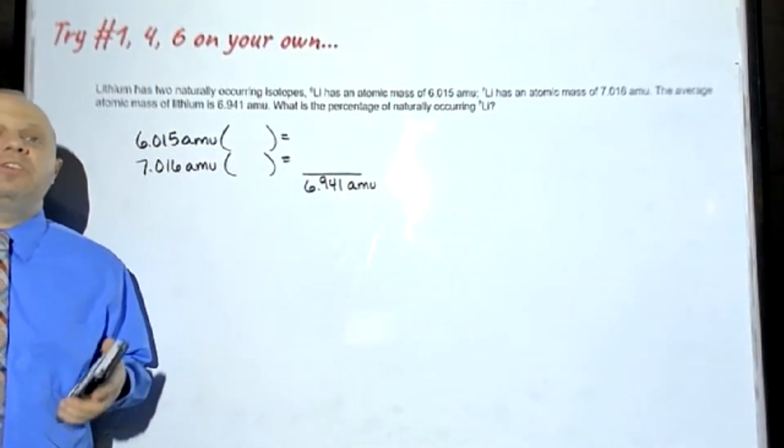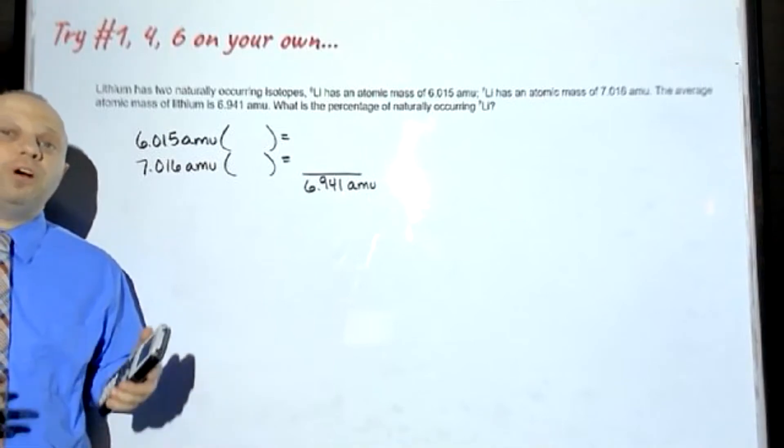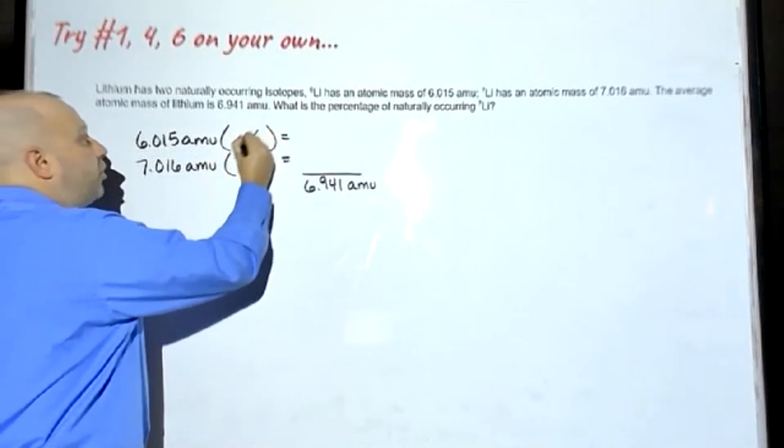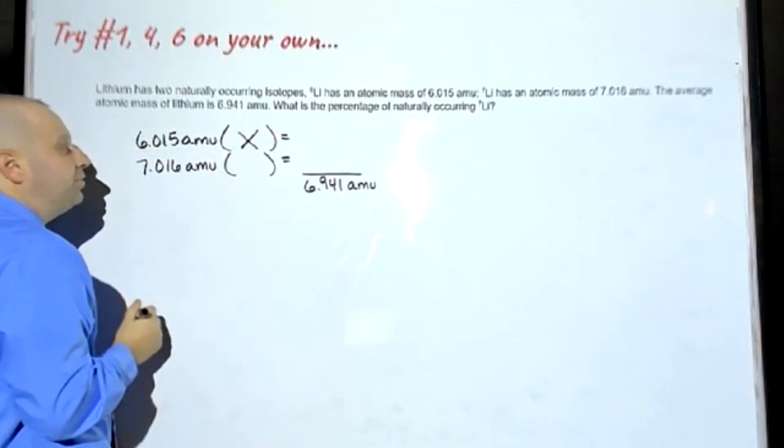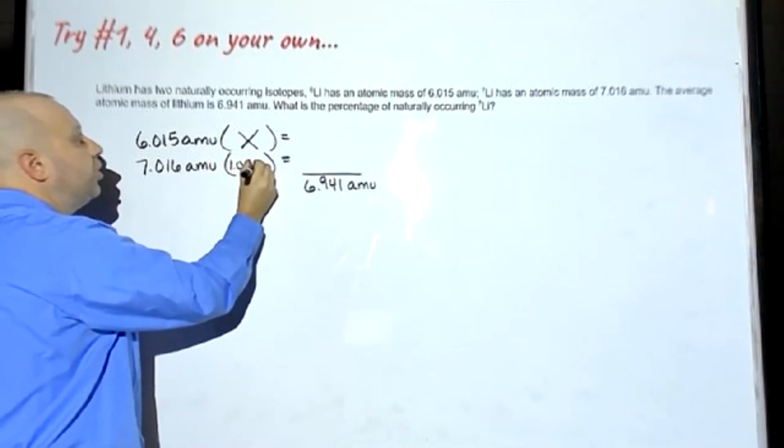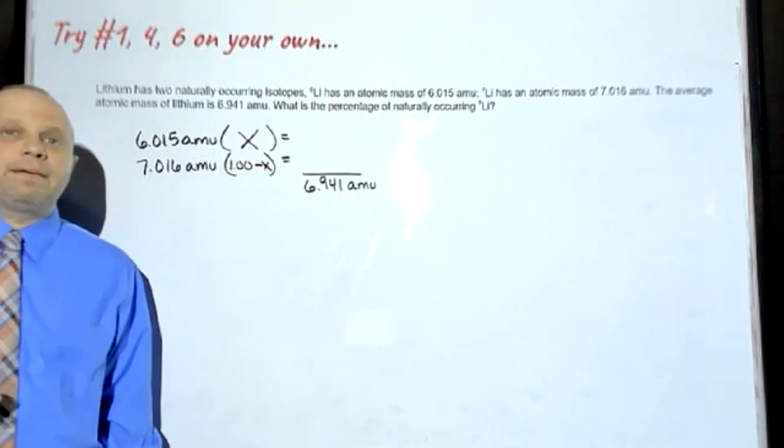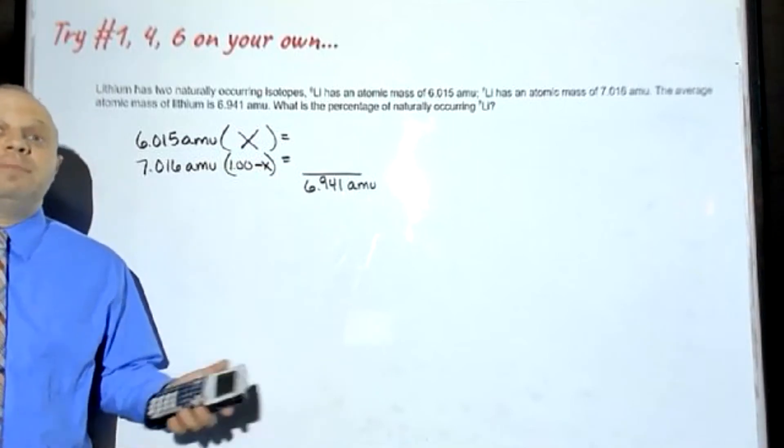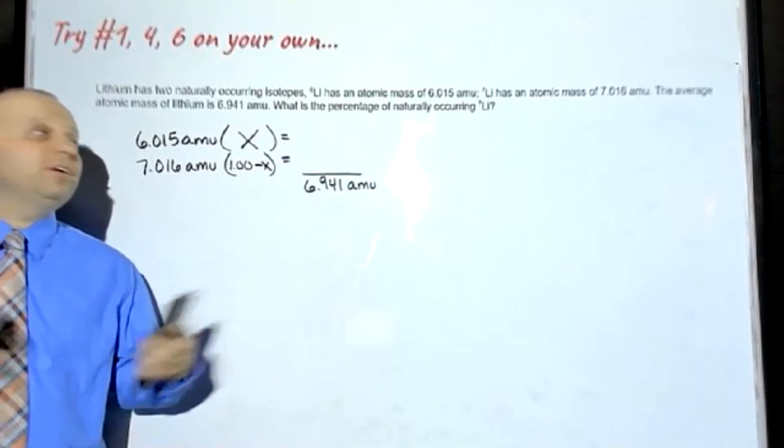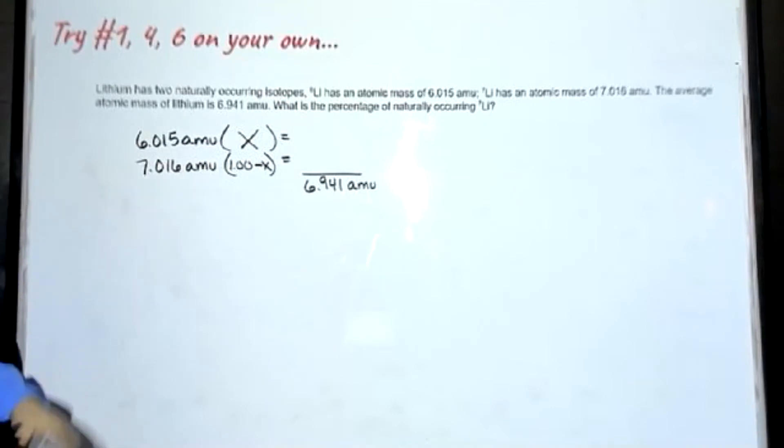We are also told the average atomic mass for lithium is 6.941 AMU. This is very similar to the last example problem we did with the two isotopes of chlorine. So in that one, we set one of our percentages as X and the other percentage was 1.00 minus X.